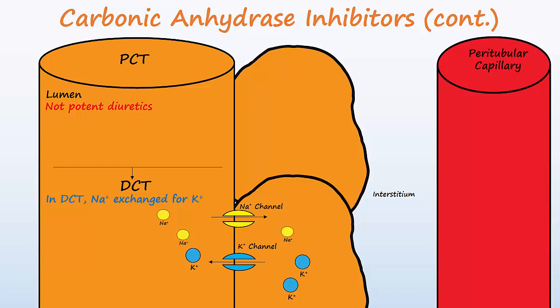Excess sodium remaining in the lumen from treatment with a carbonic anhydrase inhibitor leads to more potassium loss. This is because sodium is positively charged, and as it moves into the cell, it causes the luminal charge to be more negative, and draws positively charged potassium into the lumen. This results in more loss of potassium, which could cause hypokalemia.